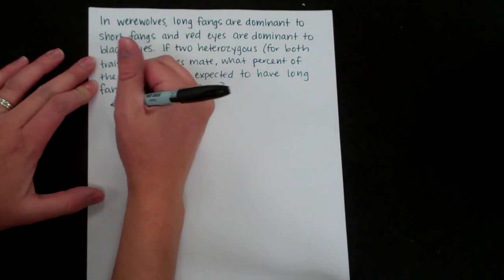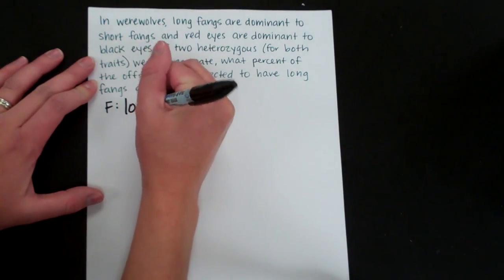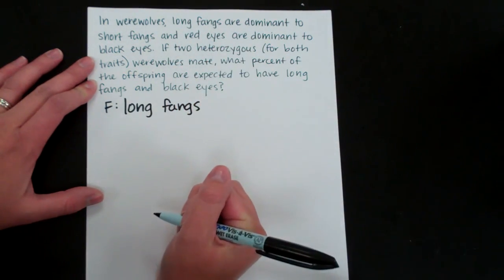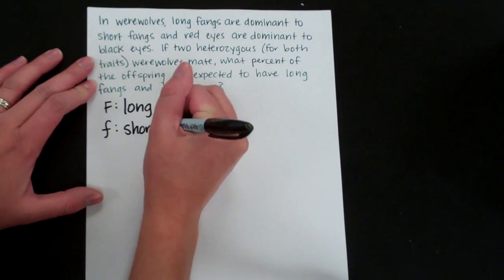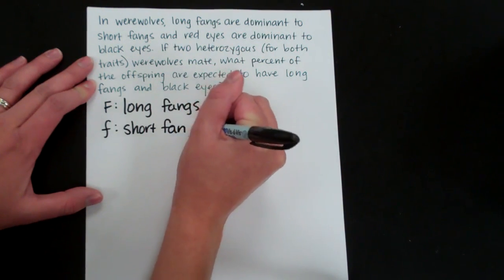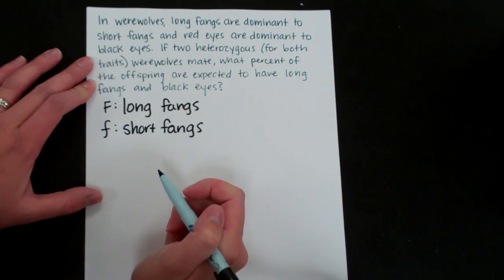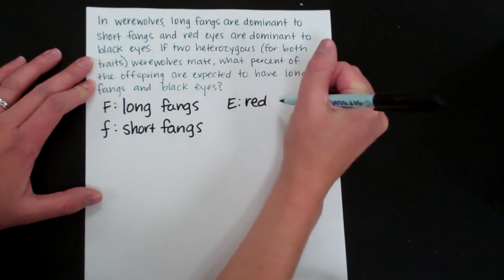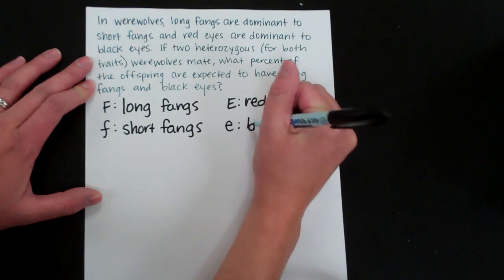It says that long fangs are dominant so I'm going to say big F is for long fangs and then I'll say that little f is for short fangs. And then let's say since red eyes are dominant, I'm going to say big E is for red eyes and little e is for black eyes.